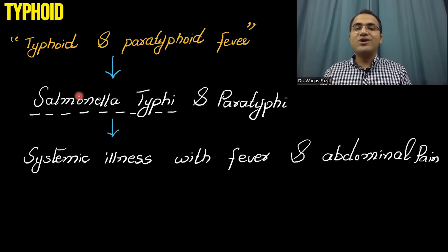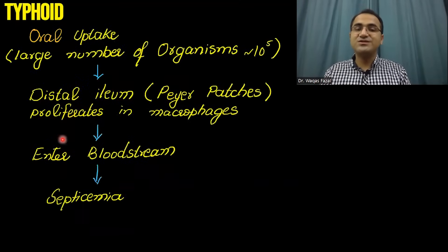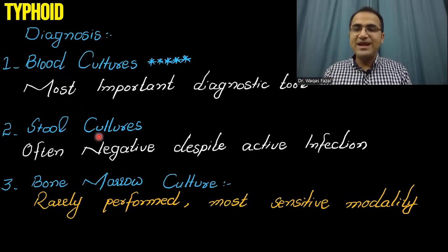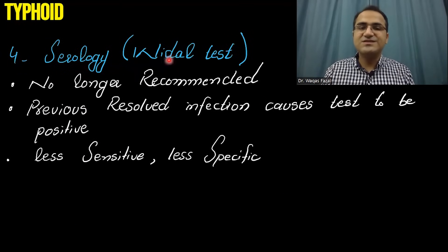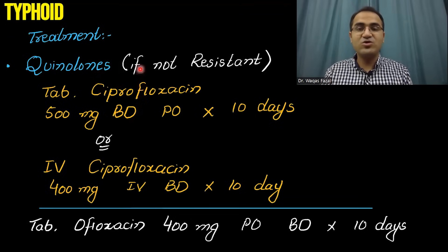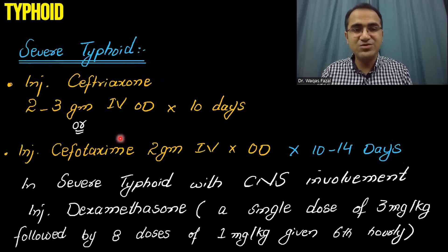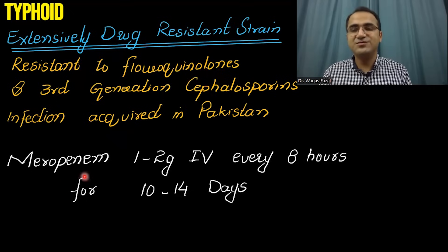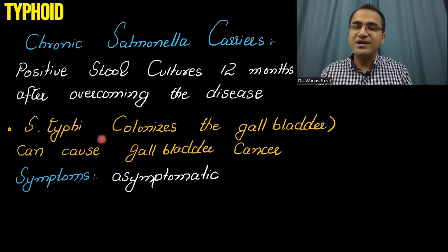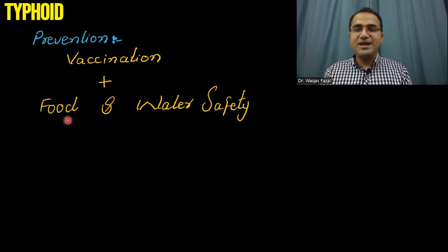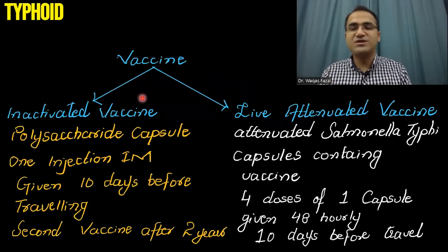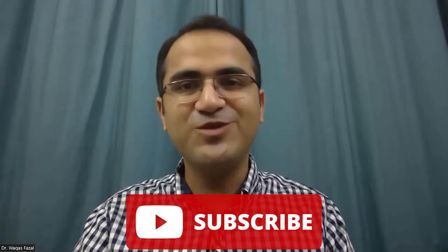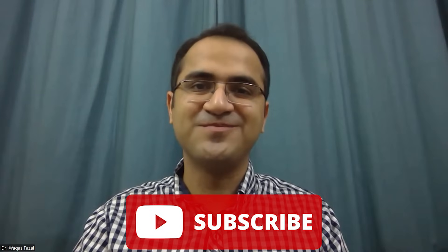In summary, we discussed typhoid caused by Salmonella typhi, the transmission, the pathogenesis, the clinical presentation in the first, second, and third weeks, and the diagnosis with blood cultures. Serology with the Widal test is no longer recommended. Treatment involves quinolones; if quinolone-resistant, options include cefixime and azithromycin. Severe typhoid is treated with ceftriaxone or cefotaxime; extensively drug-resistant cases with meropenem. Ileal perforation is referred to surgery, chronic Salmonella is treated with ciprofloxacin, and prevention involves vaccination with food and water safety.